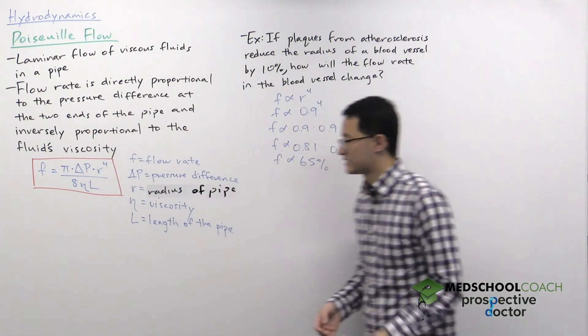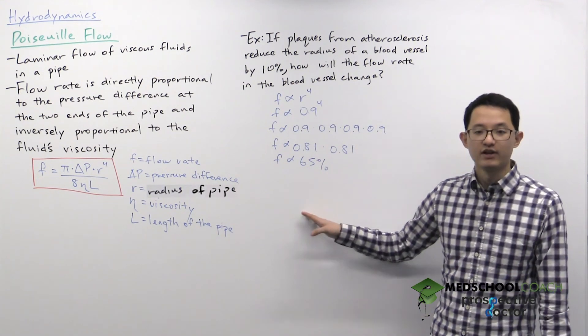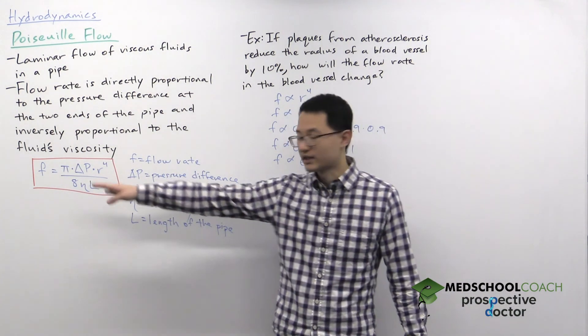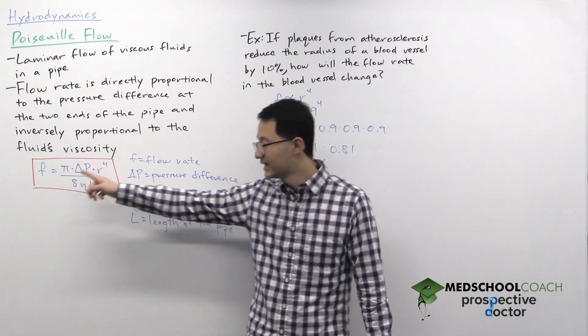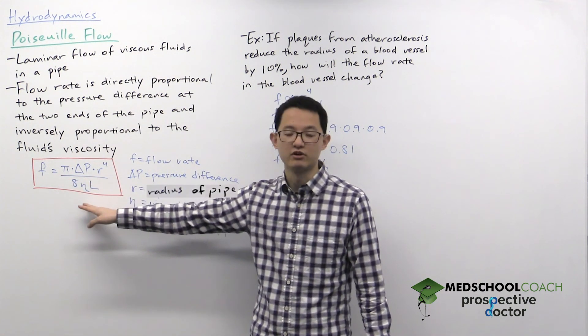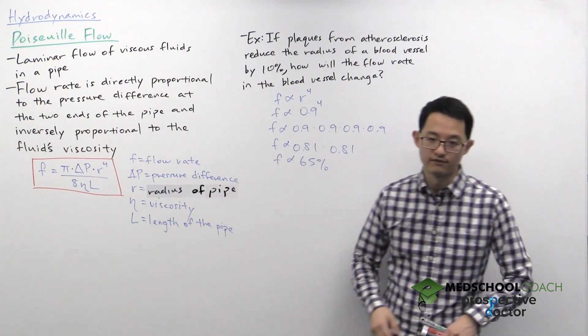So essentially this is how Poiseuille's flow works. In particular, keep in mind that the flow rate is directly proportional to the pressure difference and the radius to the power of four and inversely proportional to the viscosity of the fluid.